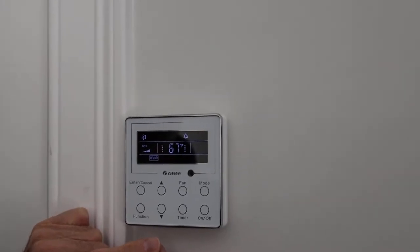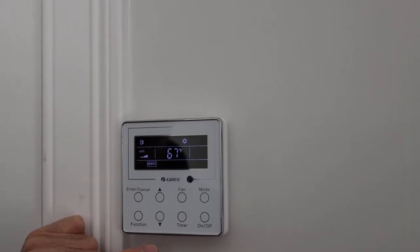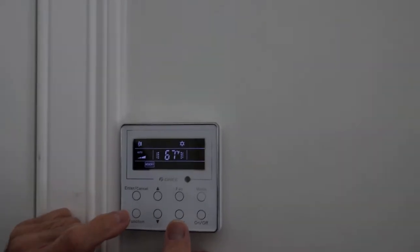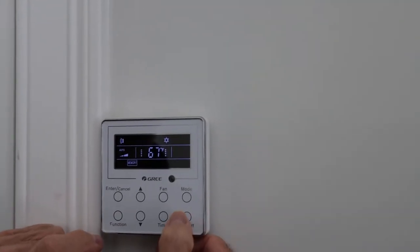To make sure that the thermostat on the wall is the controlling thermostat for the cassette unit in the ceiling, we first have to turn the unit off.